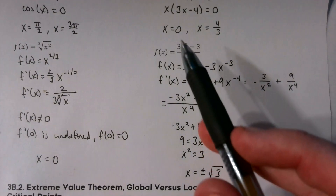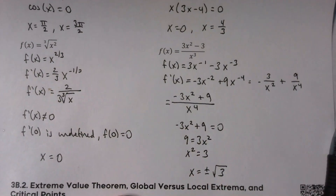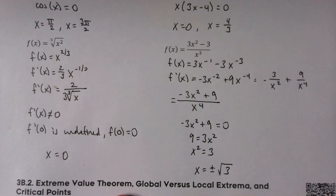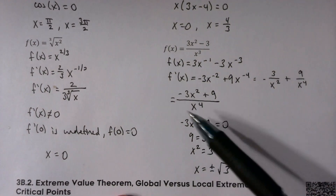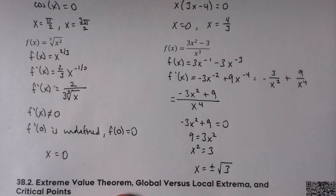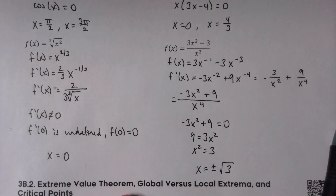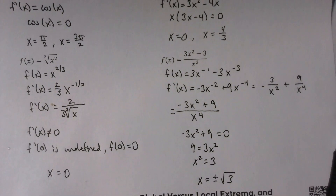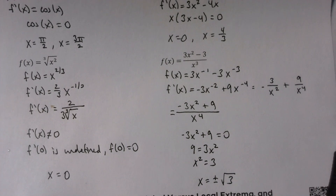So zero is not in the domain of f, so it's not a critical point even though the derivative is undefined there. Critical points occur whenever the derivative is equal to zero, or the derivative is undefined, provided that the function actually exists at that particular value.